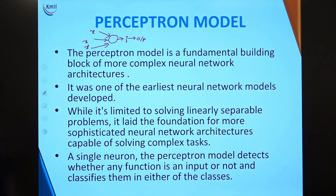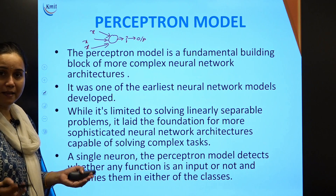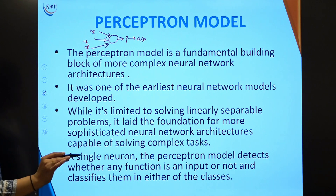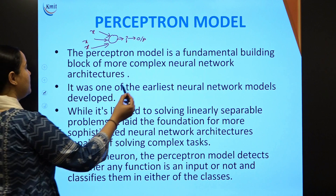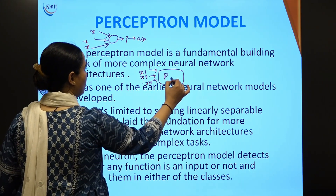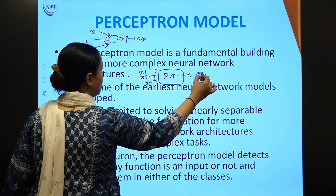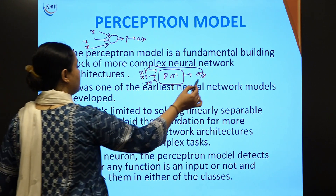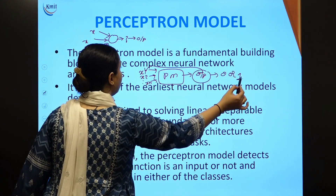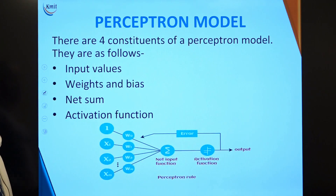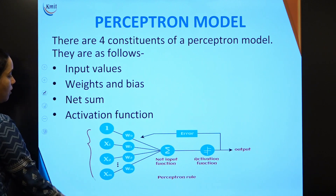We call a perceptron a single neuron. A single neuron — which is nothing but your perceptron model — detects whether any function is an input or not. When I give a set of inputs to a perceptron model and get an output, that output is either 0 or 1. So a single neuron detects whether any function is an input and classifies it into one of two classes. There are four constituents of a perceptron model.